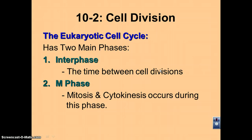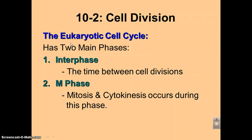In podcast number four, we are going to go over the basics of the eukaryotic cell cycle. Remember, 'eu' means true. True cells have a nucleus, and because they have a nucleus, their cell cycle is going to be slightly more complicated.